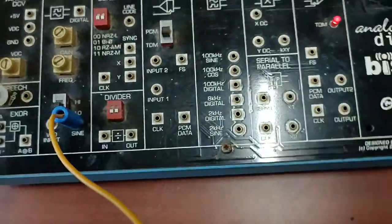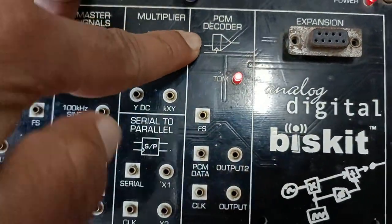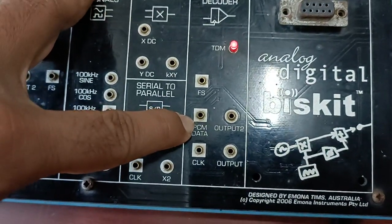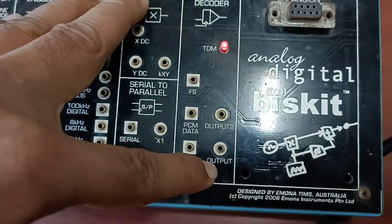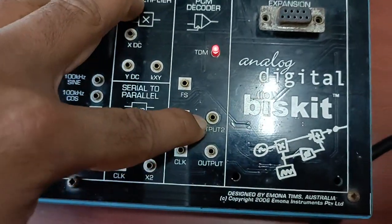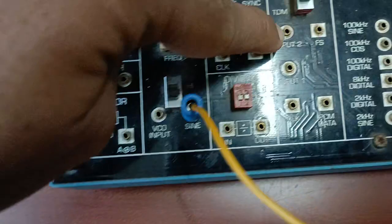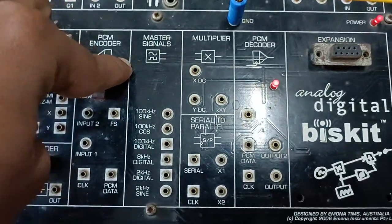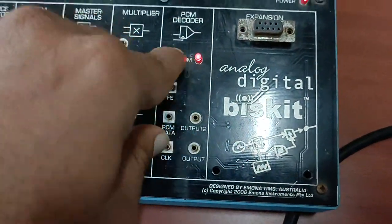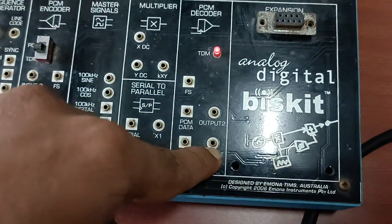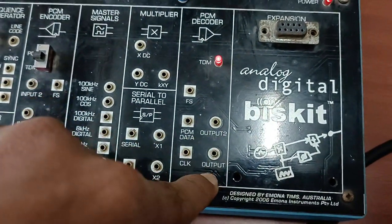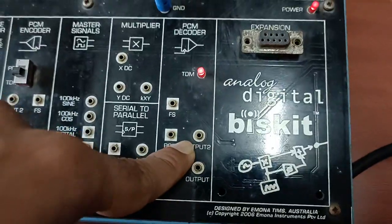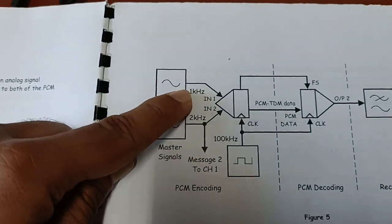In the PCM/TDM decoder, there is a frame synchronization signal, TDM data, clock frequency, and two outputs — output one and output two. The signal given at input one and input two are combined, sent from the TDM encoder to the TDM decoder, and then extracted one by one. Output one corresponds to input one, and output two corresponds to input two.